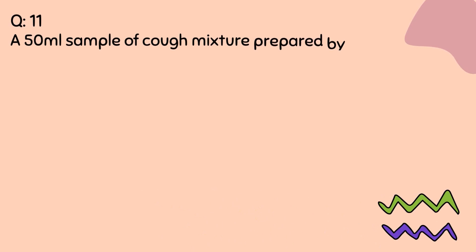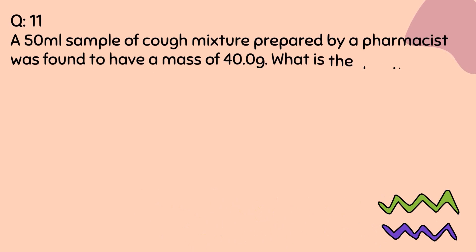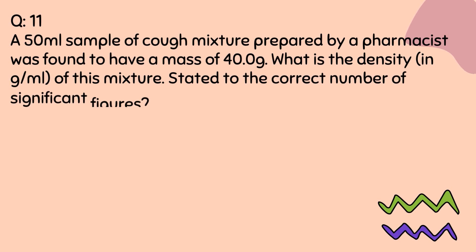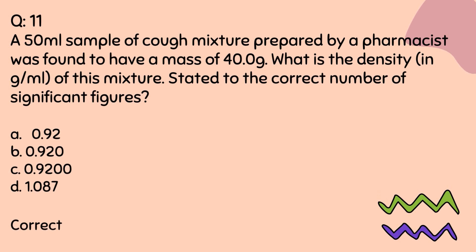Question number 11. A 50 ml sample of cough mixture prepared by a pharmacist was found to have a mass of 40.0 grams. What is the density of this mixture, stated to the correct number of significant figures? A. 0.92. B. 0.920. C. 0.9200. D. 1.087. Correct option is B.